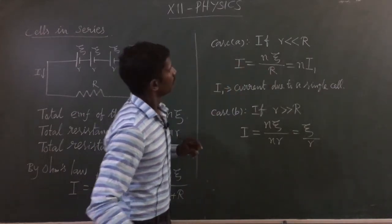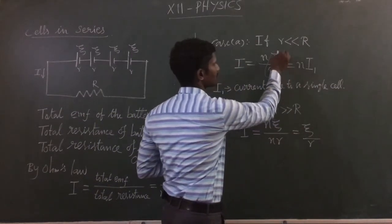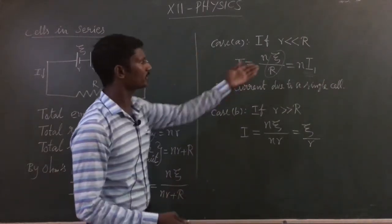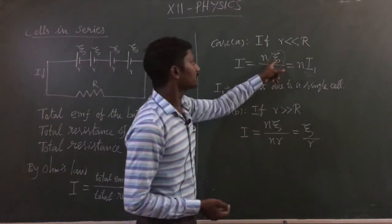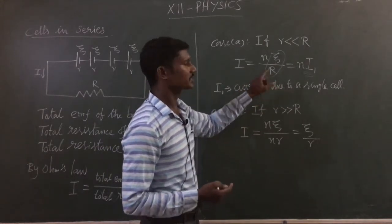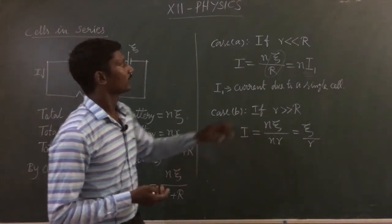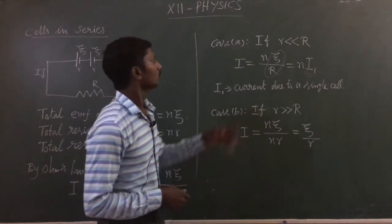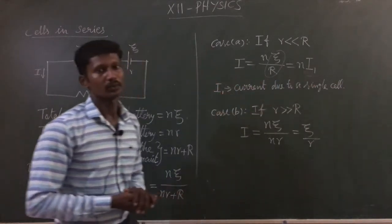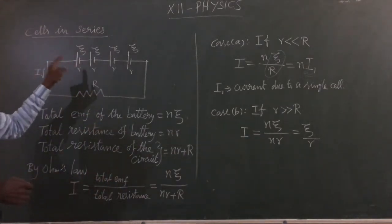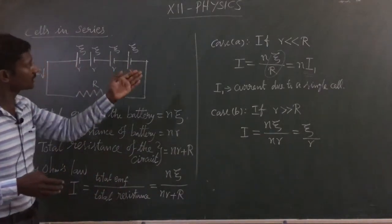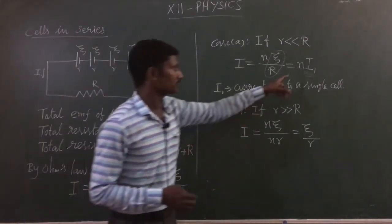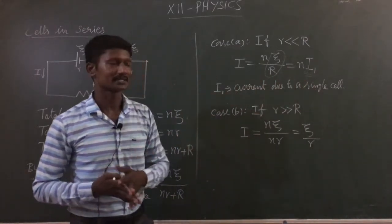Here ψ/R is the current due to a single cell, which we call I₁. So the total current is equal to N into I₁. If one cell gives current I₁, then with N cells, say 3 cells, we get 3·I₁ as the total current. So the current increases N times.